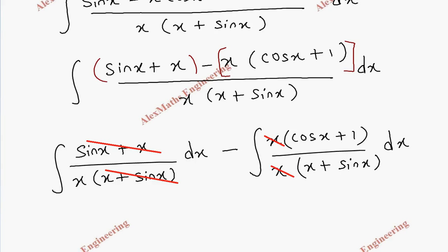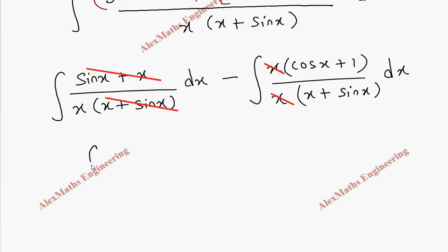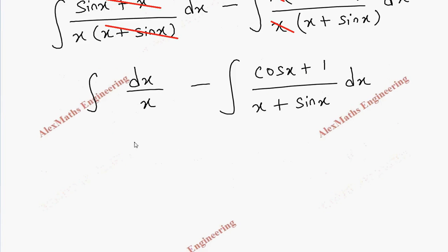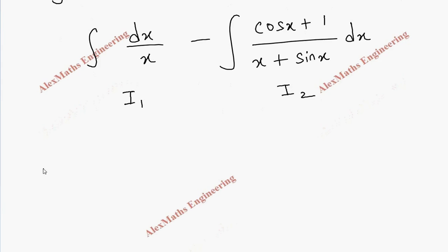And here x and x. Now after cancelling, we have first term dx by x, second term cos x plus 1 by x plus sine x dx. Now let's take this as I1, this as I2.